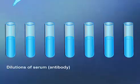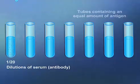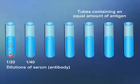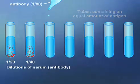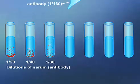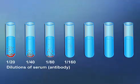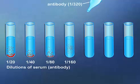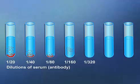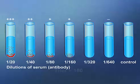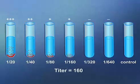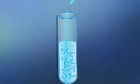Agglutination tests can also be used to measure antibody titer. In the tube test, a specific amount of antigen is added to a series of tubes. Serial dilutions of serum-containing antibody are then added to each tube. The greatest dilution of serum showing agglutination is determined, and the reciprocal of this dilution is termed the antibody titer.